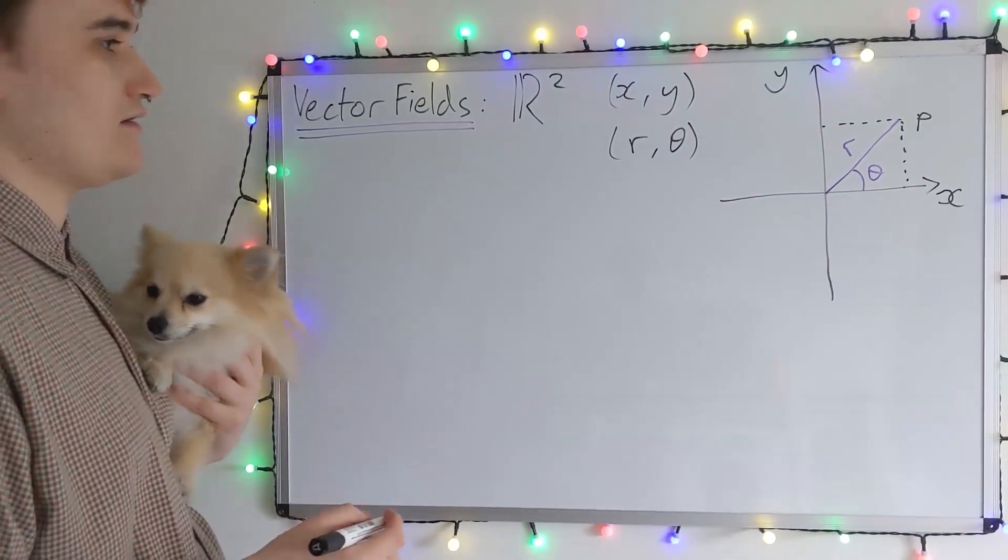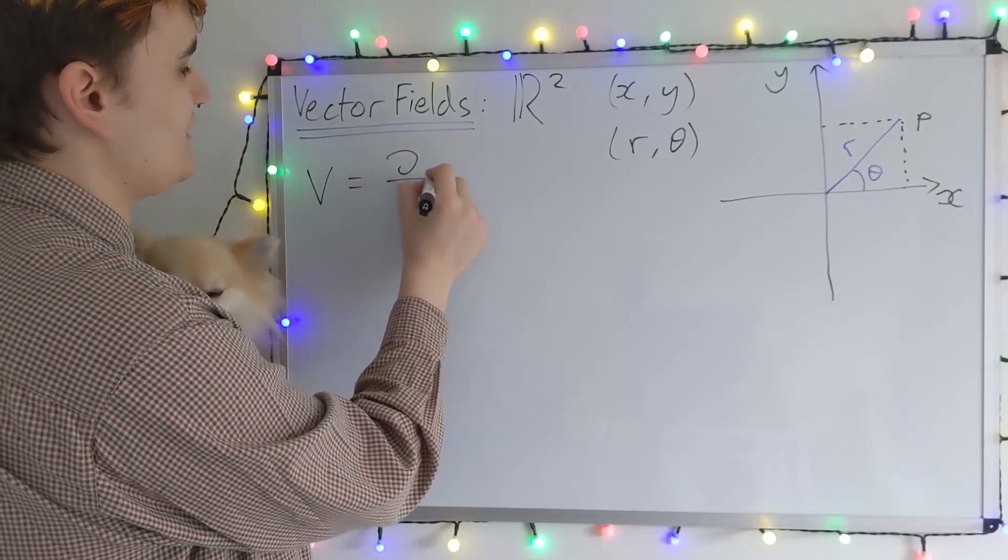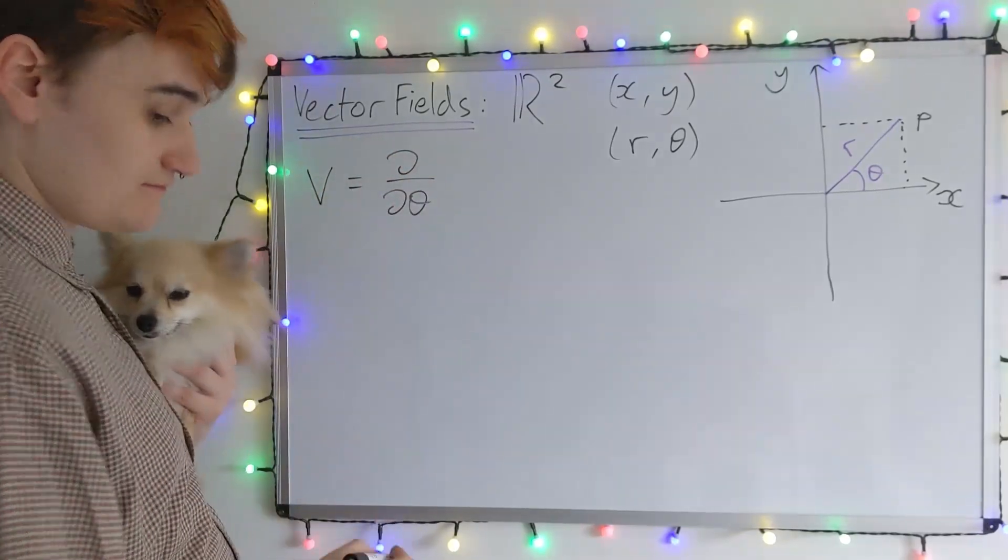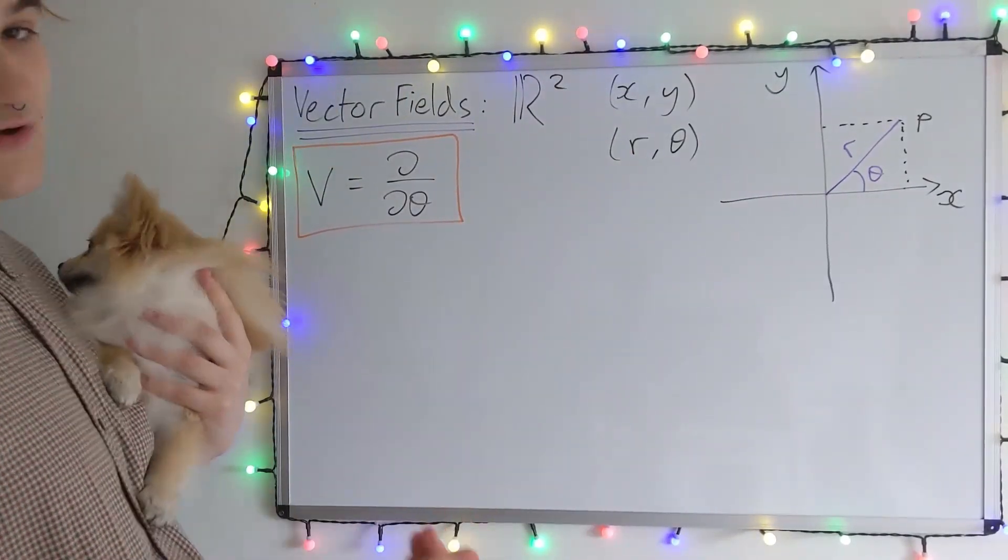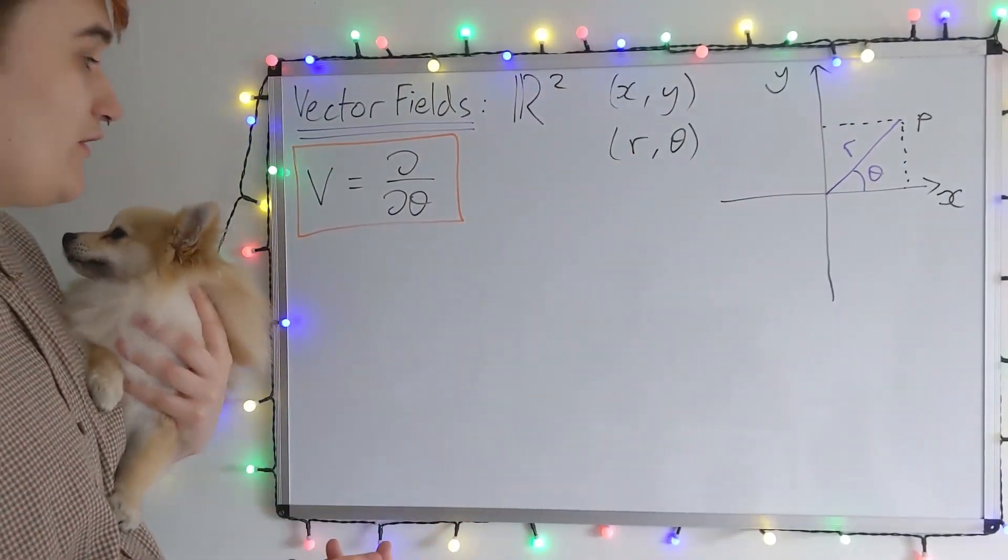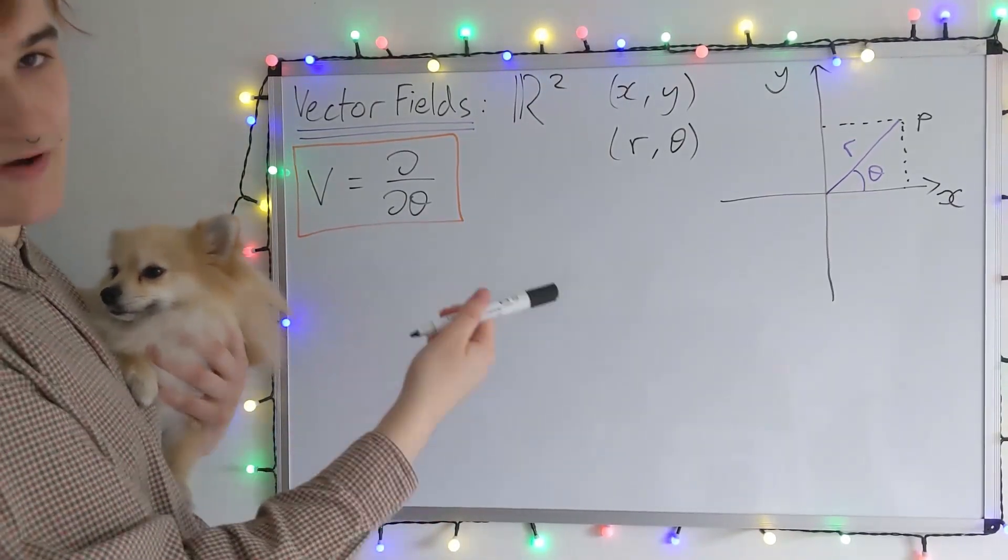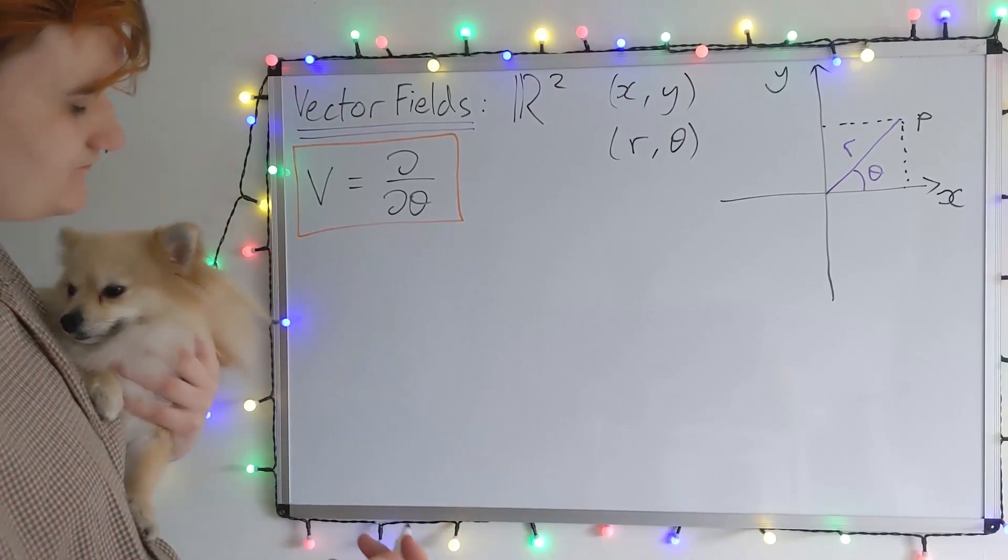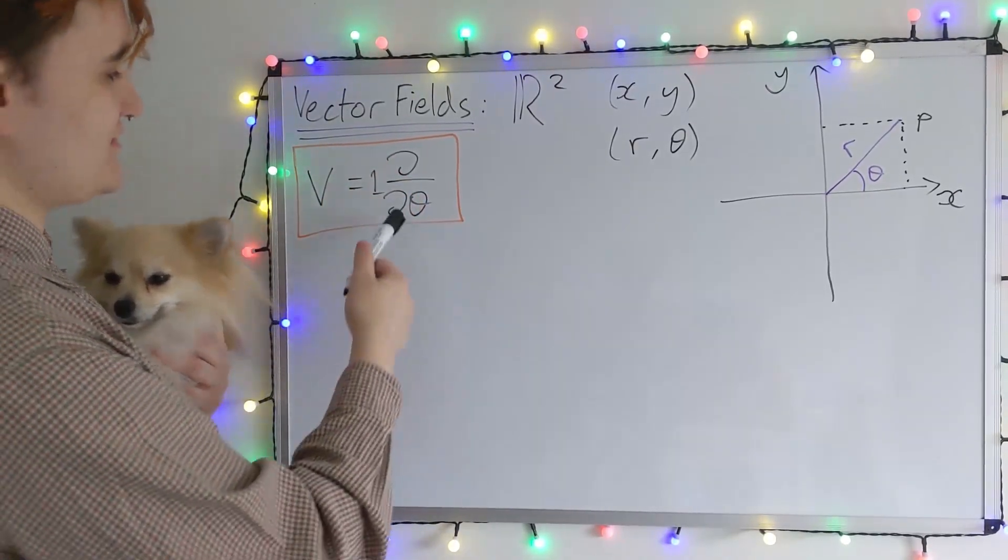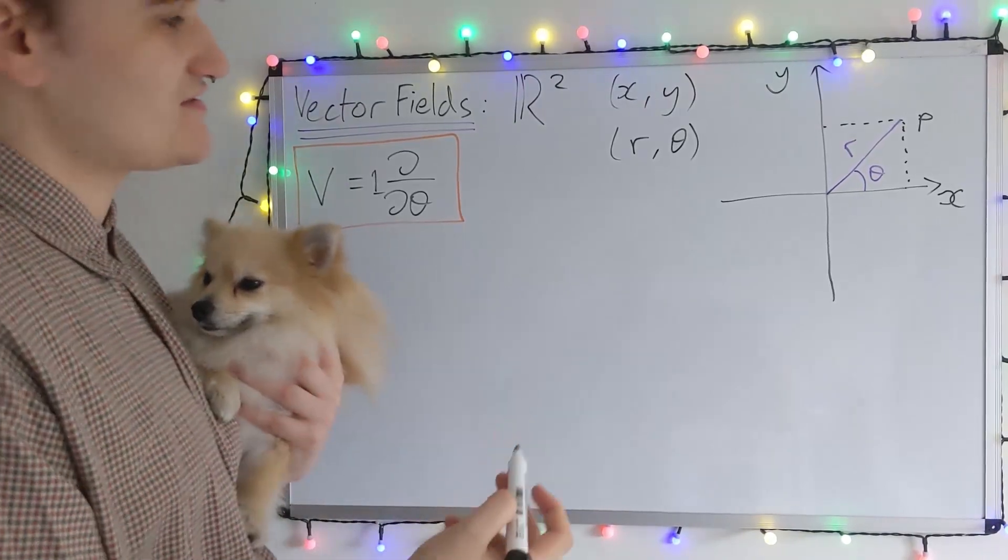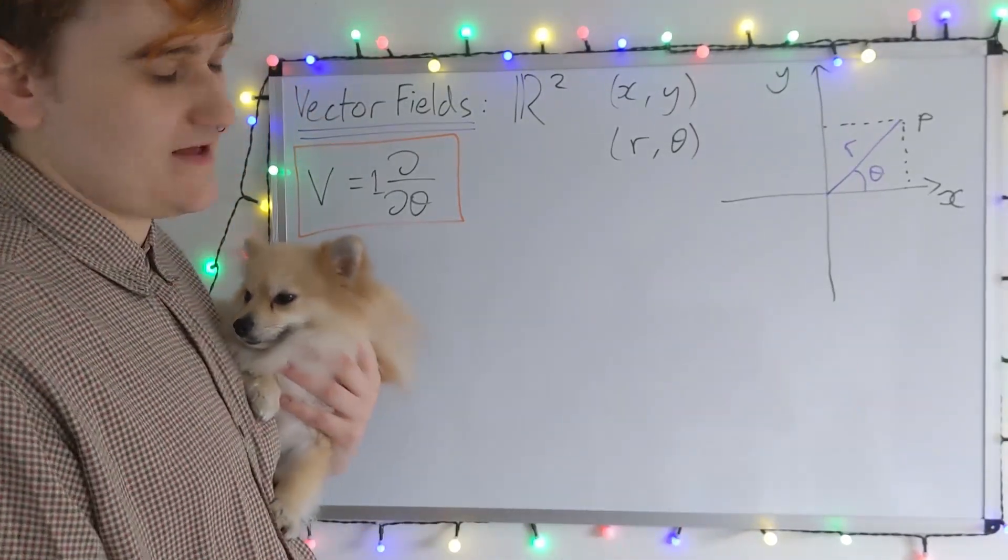So now let's see this explicitly. I'm going to first just define for you the vector field, which is going to be given by this expression. So this is our vector field now, not just a single vector at a point. What does it consist of? Well, it's just simply the d by dθ basis vector. If you like, the theta component is just one.